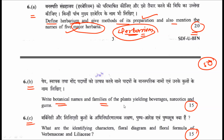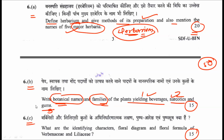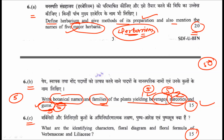The second sub-question asks for the botanical names and families of plants yielding beverages, narcotics, and gums. Each category — beverages, narcotics, and gums — carries 5 marks each, totalling 15 marks. We have many videos on our YouTube channel covering these economic botany categories, so go through those videos to get five examples for each category.